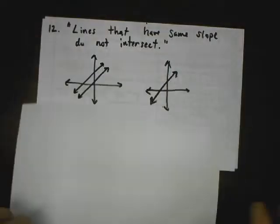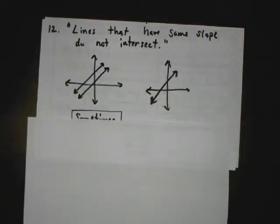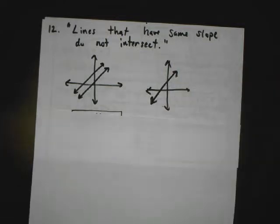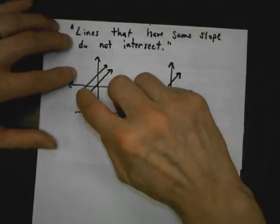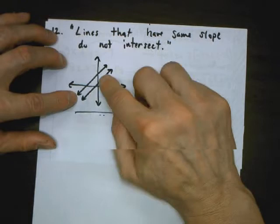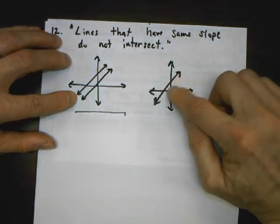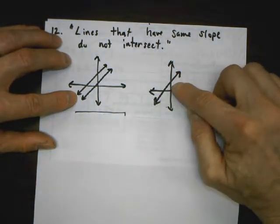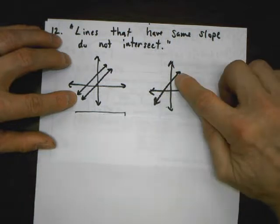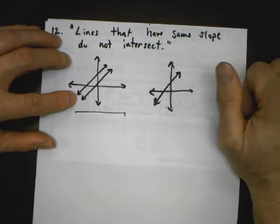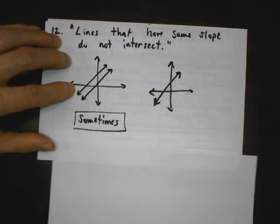Number 12 says: is this always, sometimes, or never true? They say if lines have the same slope, they do not intersect. That's true, but not all the time — because sometimes lines have the same slope and the same y-intercept, meaning the two lines are in the same spot and intersect infinitely many times. So this is only sometimes true.